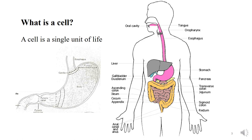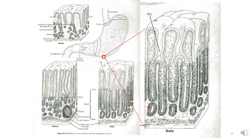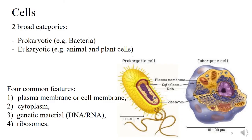A cell is a single unit of life. We have trillions of cells in our body. If you take a small portion of the stomach and magnify it, you will see hundreds and thousands of cells. Each one is a cell, and the black dots you see are the nucleus. There are two broad categories of cell: the prokaryotic cell and the eukaryotic cell. An example of a prokaryotic cell is the bacterial cell, and examples of eukaryotes are animal and plant cells.